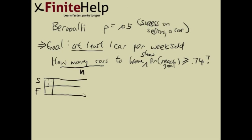We have successes and failures. Zero successes and N failures is the extreme case — where she sold no cars after showing N cars. She could also have one success and N minus one failures, and so on. Since we don't know N, we can't add all these scenarios. The only thing we can do is take 1 and subtract the probability that she sold no car.